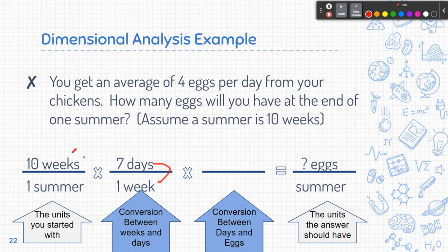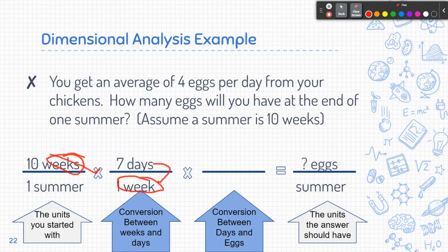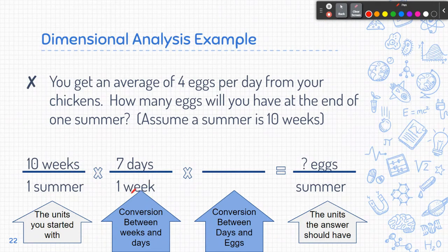So I need weeks, or because I have weeks on the top, I need weeks on the bottom. Because that way when I multiply this, I'll have one thing on top, one thing on the bottom, and those will cancel out. And then I'm going to convert. So I have my conversion from weeks to days. And now I'm going to do days to eggs. So again, I have 4 eggs.